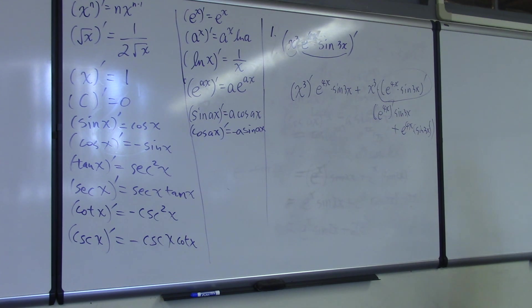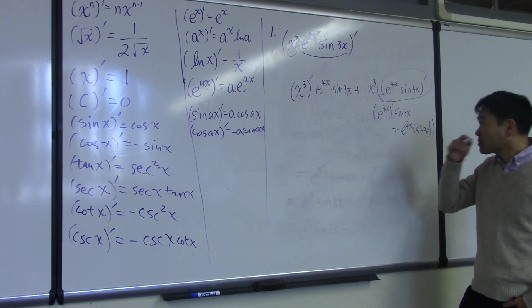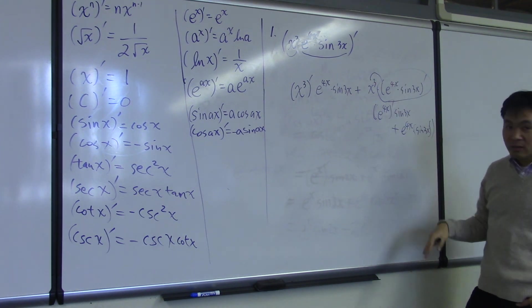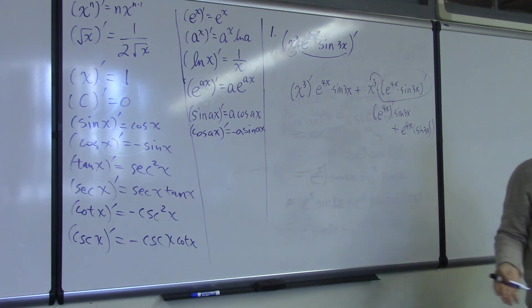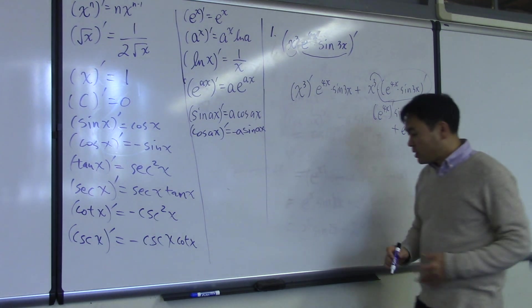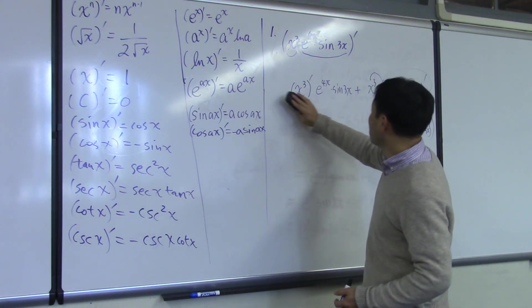So that's the proper way to do this using the product rule. But once you multiply the x cubed inside and stare at what you get, you realize what happened was basically all of these products, individual functions inside the products got differentiated once.